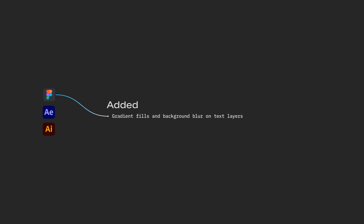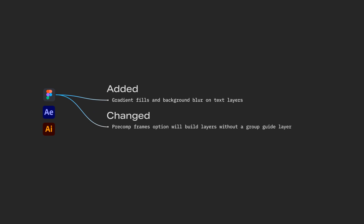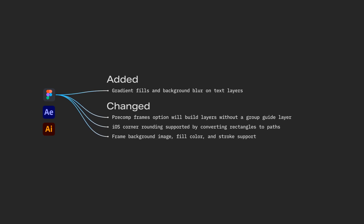Other changes in this update include gradient fills and background blurs on text layers are now supported from Figma. Transferring frames with the Pre-Comp option enabled will now build layers without a group guide layer. iOS corner rounding is now supported by converting rectangles to paths. Figma frame background images, fill colors, and strokes are now supported.